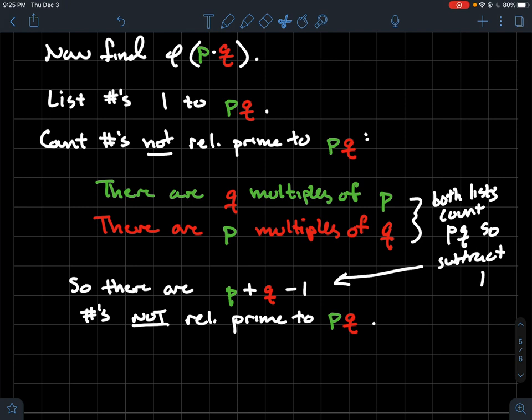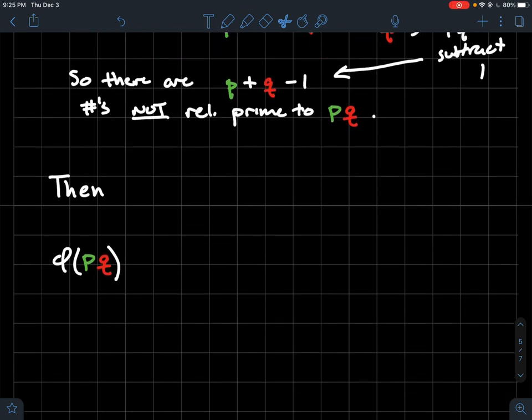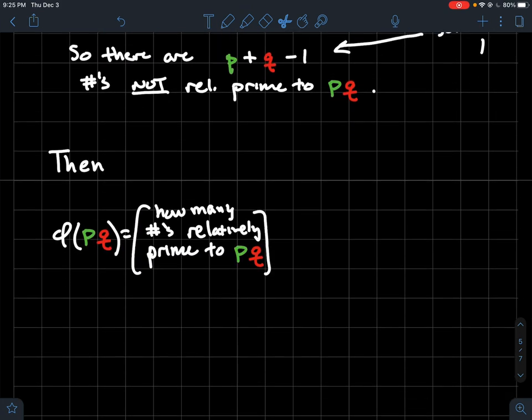So what did we just figure out? Now, in your list from 1 to pq, I know that there are p plus q minus 1 numbers that are not relatively prime to p times q. So how many are? Just do total minus that. So phi of pq, which is how many numbers are relatively prime to pq, should be pq, which is the total, minus how many are not, which you just calculated was p plus q minus 1.